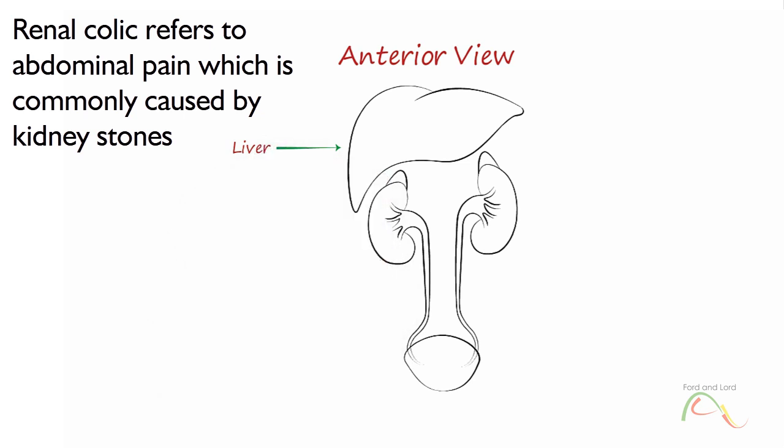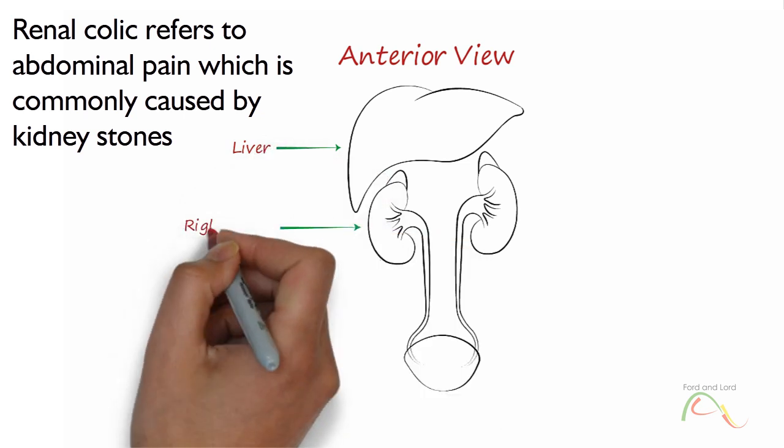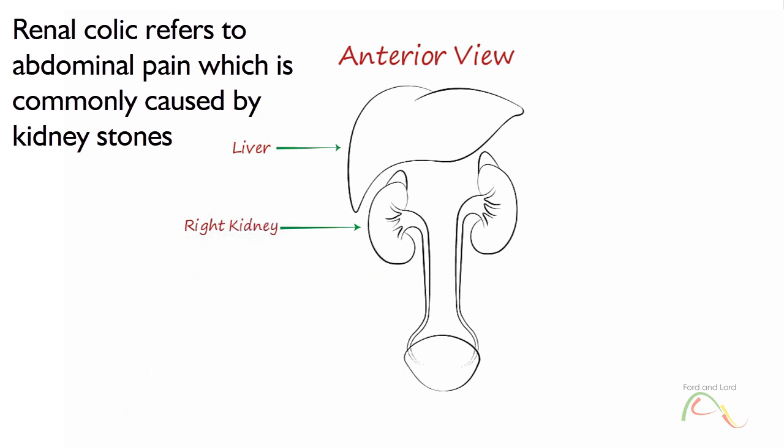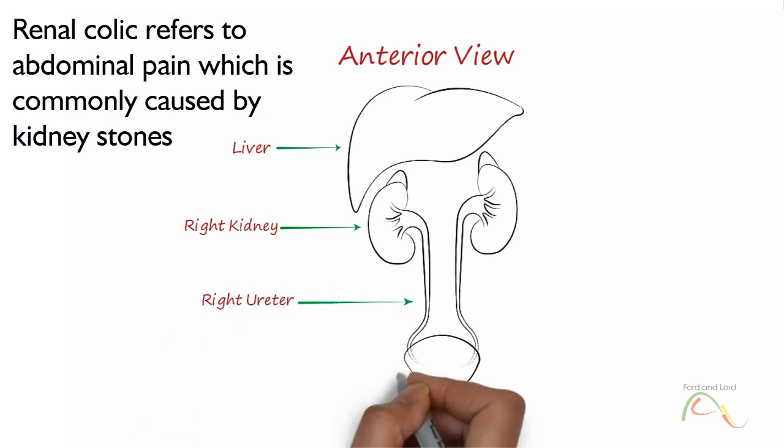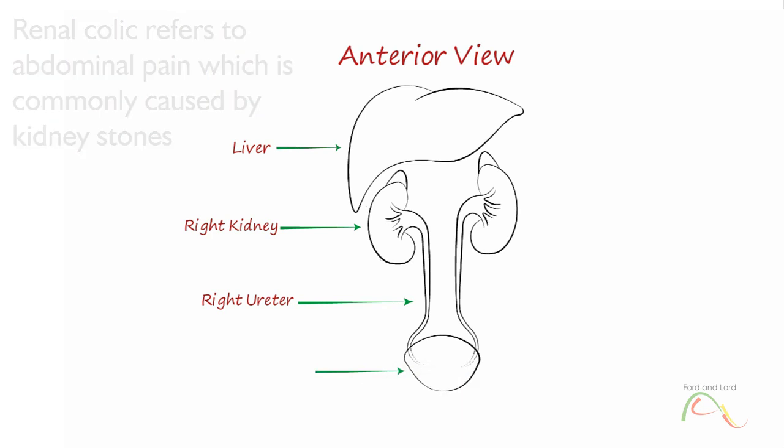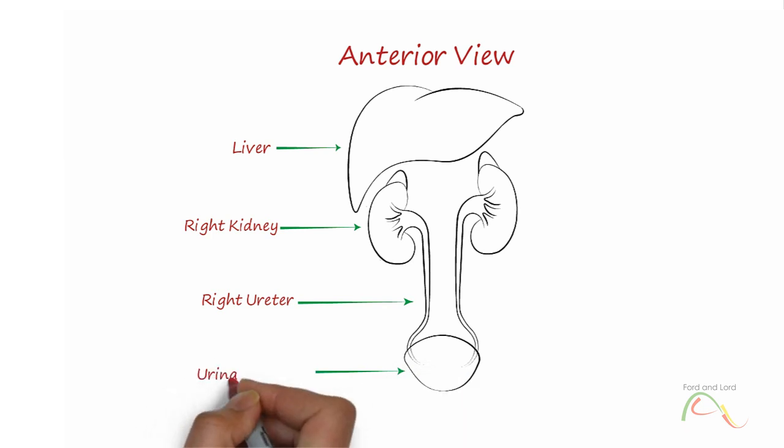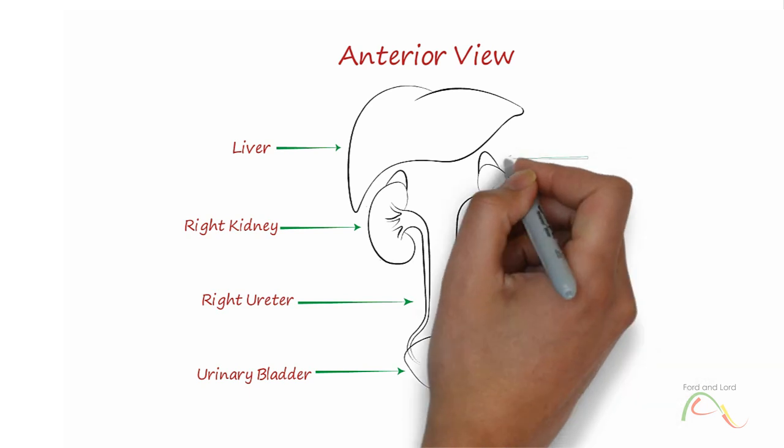It is a common condition seen in emergency departments around the world. The accurate term for this condition is ureteric colic. The term renal colic actually refers to a group of symptoms related to the kidneys and ureters. Although the most common cause of renal colic is ureteric stones, there can be other causes, such as a blood clot and sloughed renal papilla.